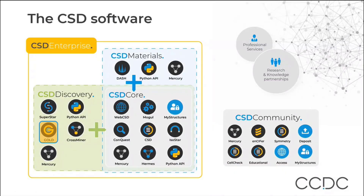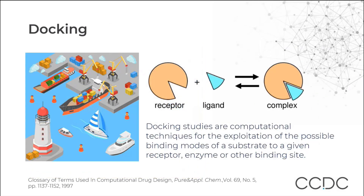The CSD Discovery suite is the main focus here, and we have GOLD, Cross Miner, Mercury and a Python API that help you in various discovery programs. Today we are going to look into the software GOLD. Hermes is our interface for launching most of the tools in CSD Discovery, and today we are going to look into docking.